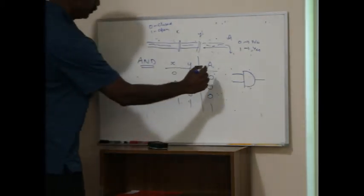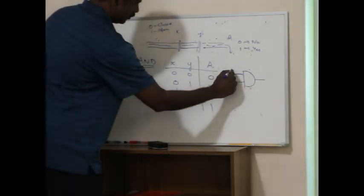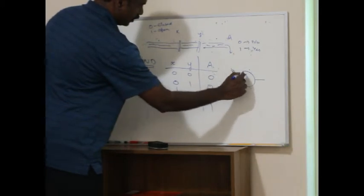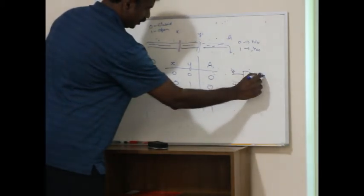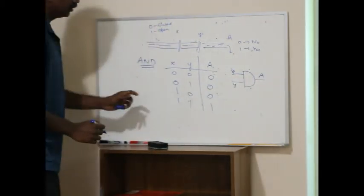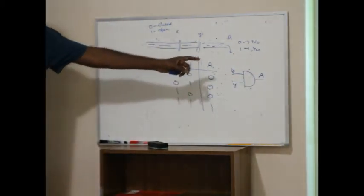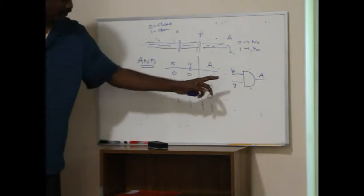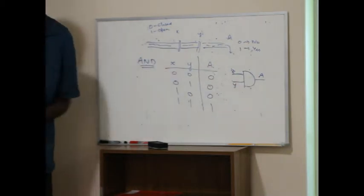If I have X and Y and this is A, it says A will be 1 only if both X and Y are 1.